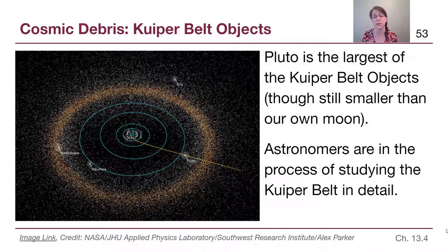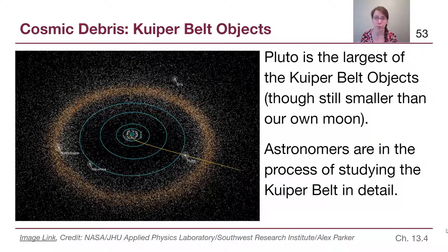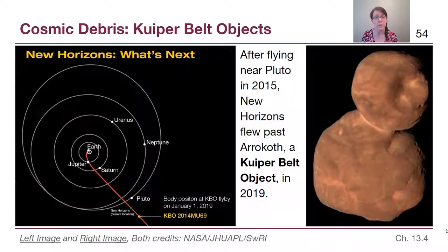That bend is called a gravitational assist, which actually sped the spacecraft up. We can also see where Eris, Haumea, and Makemake were at the time of the Pluto flyby. There won't be a New Horizons study of those other dwarf planets, but we can observe other objects along that path.